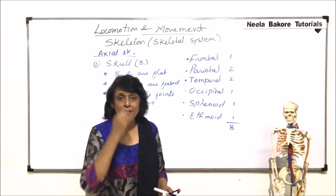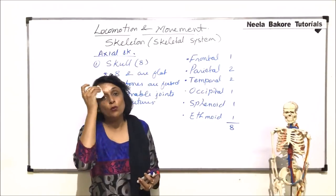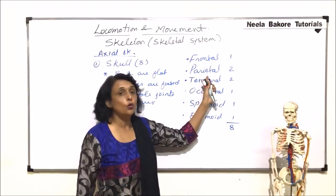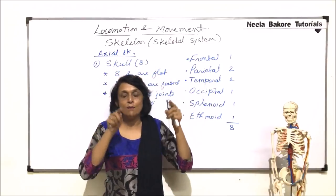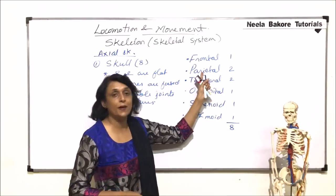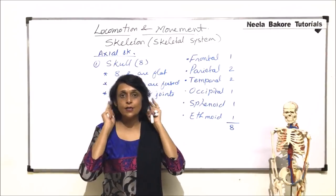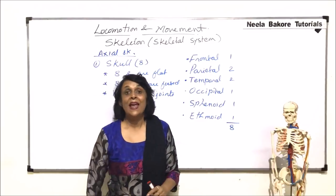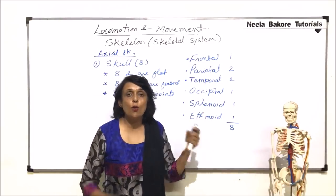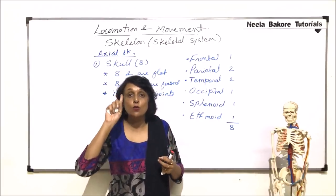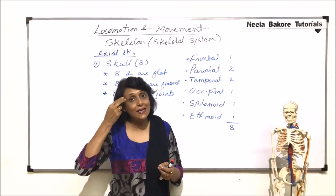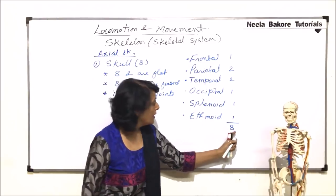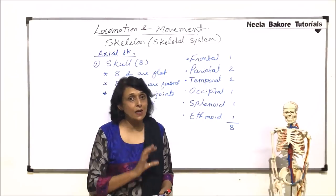Let us have a quick recap of where these bones are: frontal makes the forehead — only one bone. Two parietals make the slightly bulgy part of the skull. Just near the ears are two temporal bones. One occipital is on the back side. One sphenoid and one ethmoid make part of the orbit — the roof and the side of the orbit. So there are eight bones in the skull region.